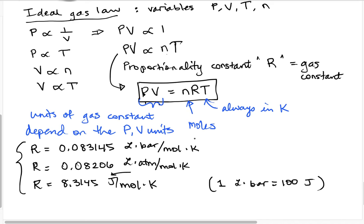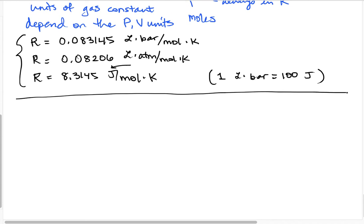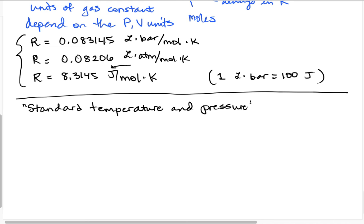Now that we have the ideal gas equation, let's talk about a useful reference point for gases called standard temperature and pressure. You'll often see it referred to as STP. The reason STP is useful is that gases tend to take up about the same amount of space based on how much pressure we have and what the temperature is, and they aren't hugely sensitive to small pressure changes.